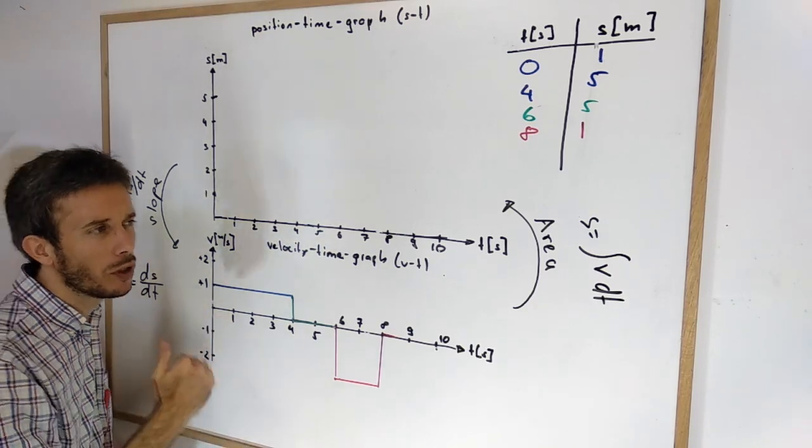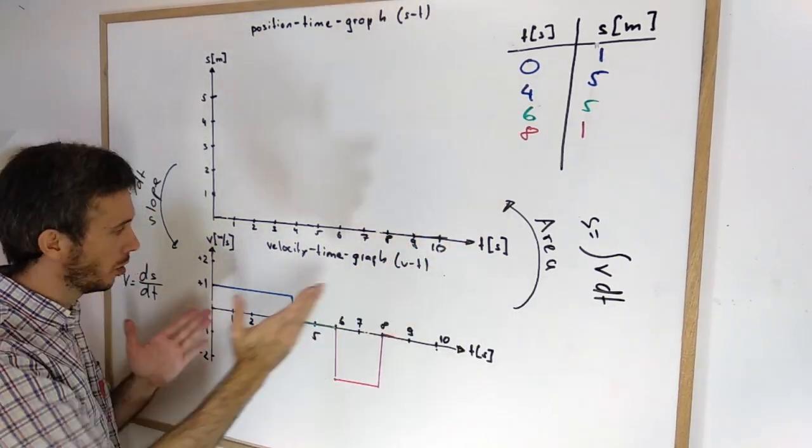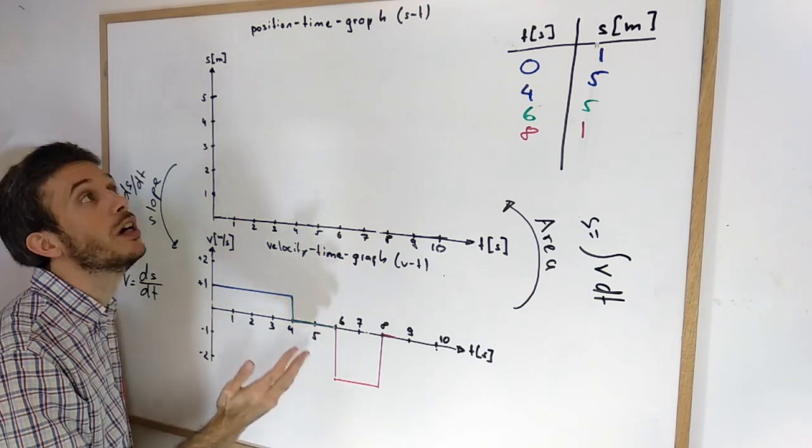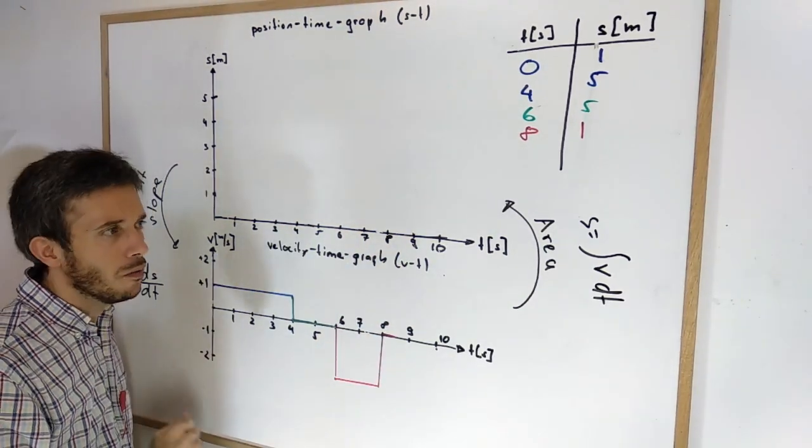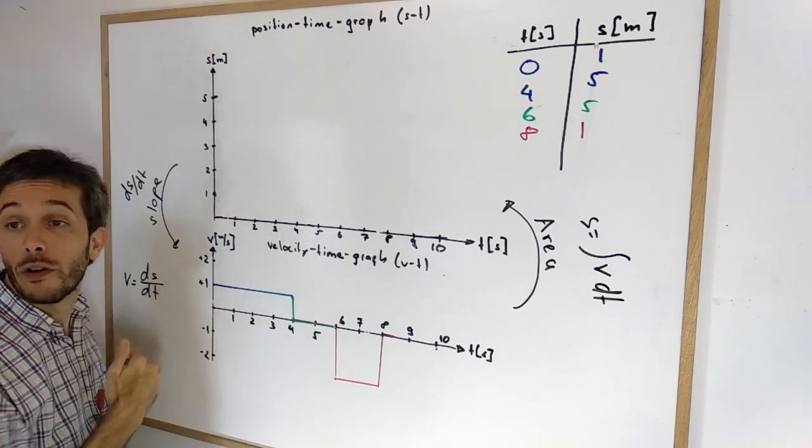But what do we do if you have to go the other way around? If we are given a velocity time graph and we have to find the position time graph. Well, what's the opposite operation for derivation?